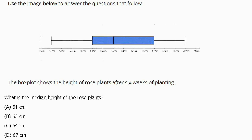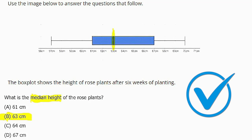All right. In our final question here, we are asked to look at a box and whisker plot, or box plot, that's showing the height of rose plants after six weeks of planting. And the question is asking us, what is the median height of the rose plants? So when we're looking at a box and whisker plot, remember that the median is represented by this line within the box here. So this is a pretty straightforward question. We can clearly see that the median is 63 centimeters. So our correct answer for this question is B.